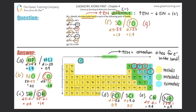For part g, CN versus NN. Both bonds contain nitrogen at 3.0. In NN, both atoms are nitrogen so the other atom is also 3.0. Carbon is 2.5. For CN: 3.0 minus 2.5 gives an electronegativity difference of 0.5. For NN: 3.0 minus 3.0 gives zero. Since 0.5 is larger, CN is the more polar bond.